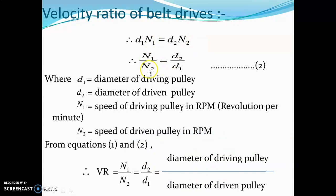Therefore, n₁ upon n₂ is equal to d₂ upon d₁. n₁ and n₂ is the velocity ratio - the speed of the driving pulley and the driven pulley. So the velocity ratio n₁ upon n₂ is equal to d₂ upon d₁. This means the velocity ratio depends on the diameter of the driving pulley and the driven pulley.